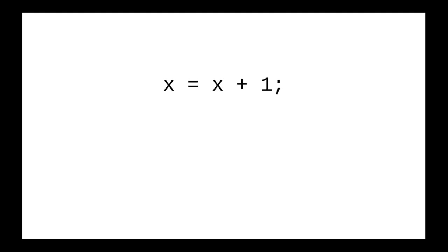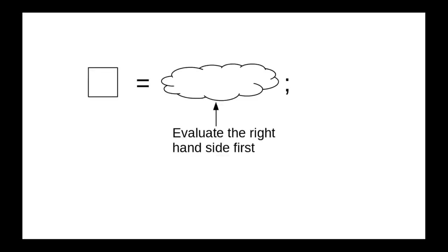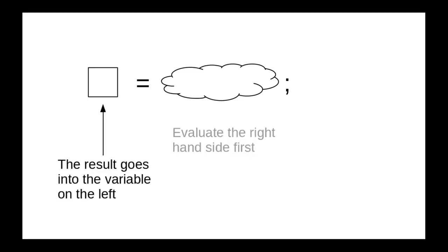You'll see patterns like this all the time in Java. You read it as 'x is assigned x plus 1' or 'x becomes x plus 1.' The moral of the story: whenever you see an equal sign in a Java statement, you read it as 'variable is assigned value,' 'variable becomes value,' or 'variable gets value.' You go to the right-hand side first and figure out what that value works out to. Once it's completely worked out, the variable on the left will get that value.